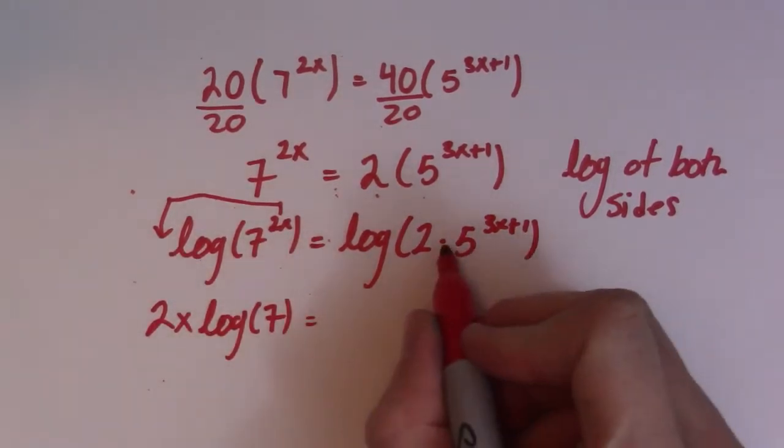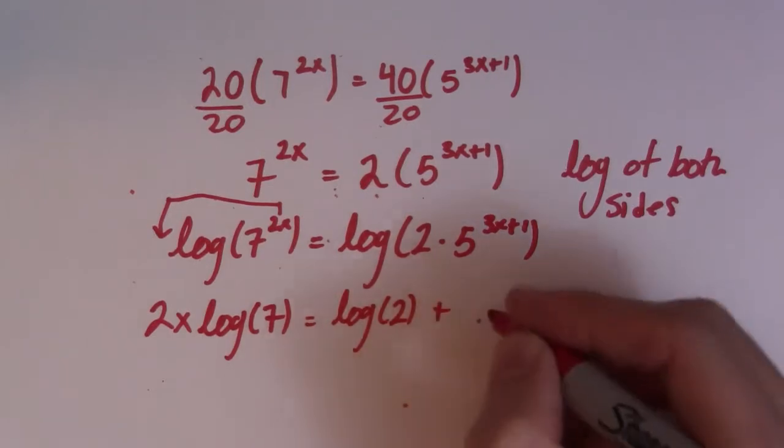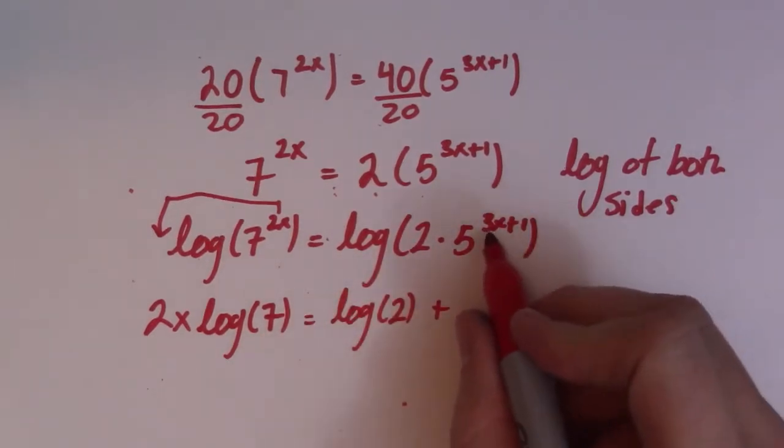And another one of my log rules is that if I have things that are multiplied inside a log function, I can add them. So I have log of 2 plus log of 5, 3x to the 1.